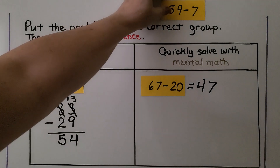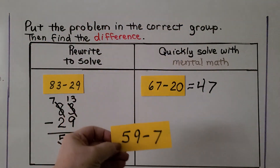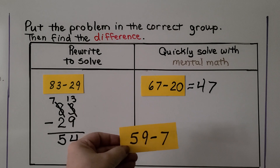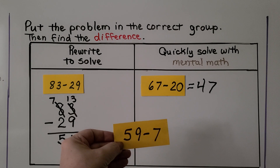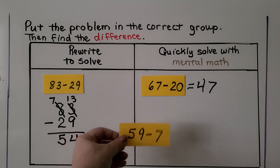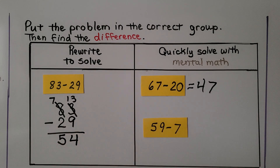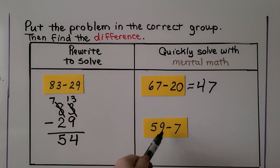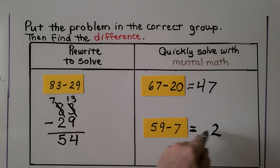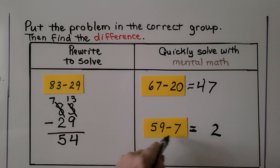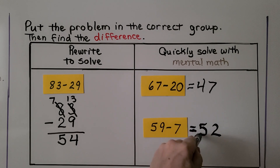What about this last one? Do we need to rewrite it to solve, or can we quickly solve it with mental math? If you said quickly solve with mental math, you're right. There are no tens in the subtrahend — we're just taking away seven ones from nine ones. Nine minus seven leaves two ones. We're not taking away any tens, so the tens stay the same. It's equal to 52.